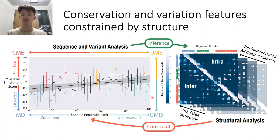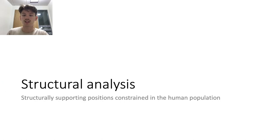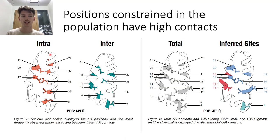I followed this up by supporting positions constrained in the human population with a comprehensive structural analysis. I gathered 265 armadillo repeats across 162 PDB structures and built a contact map to identify the most frequently observed residue pair interactions in the armadillo repeat family. We focused on positions which are conserved and missense depleted, and unconserved positions that are also missense depleted. We studied and combined both intra-repeat contexts — within a repeat — and inter-repeat contexts — between repeats of an armadillo domain — visualized in grey in this figure. We then referred back to the positions highlighted from the sequence and variant analysis and only visualized classified positions that agree with the structural analysis.